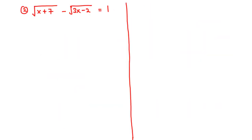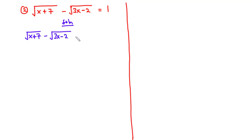Now let's take the second question. For question 2, the square root of x plus 7 minus the square root of 3x minus 2 is equal to 1. The first thing we are going to do is transpose the negative square root of 3x minus 2 to the right-hand side, because we don't want to deal with negatives. So we have: square root of x plus 7 equals 1 plus the square root of 3x minus 2.